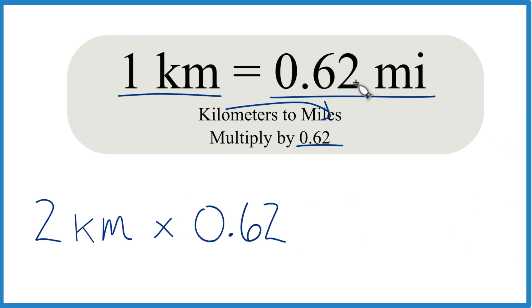And remember, that's 0.62 miles per 1 kilometer, so per kilometer. So we can just write the units there. Now we multiply 2 times 0.62, that's 1.24.